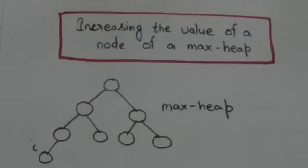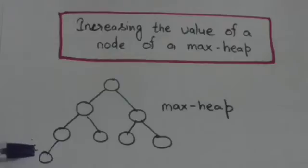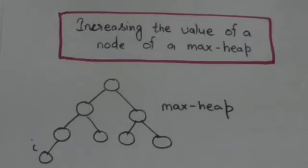Hello friends, welcome back. In this tutorial we will learn how we can increase the value of a node of a max heap. Suppose there is a max heap and we have to increase the value of its particular node i. We will increase the value of this node i. Now the value of node i has been changed — it may be larger than the value of its parent. If it is larger than the value of its parent, then the max heap property will be violated.